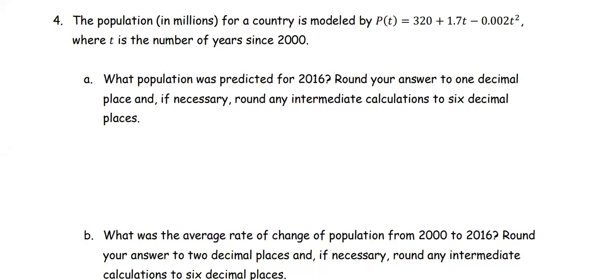In this example, the population in millions for a country is modeled by P(t) = 320 + 1.7t - 0.002t², where t is the number of years since 2000. Part A: